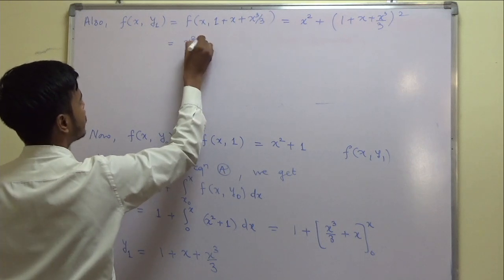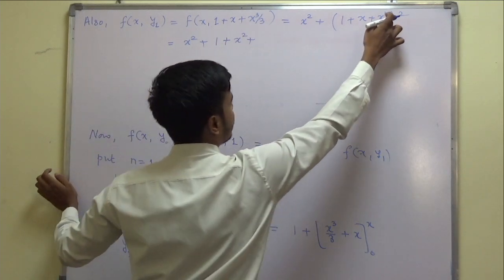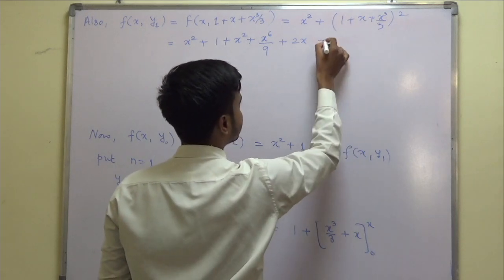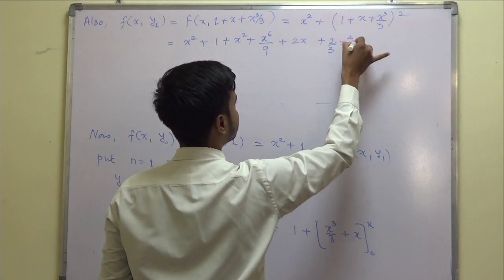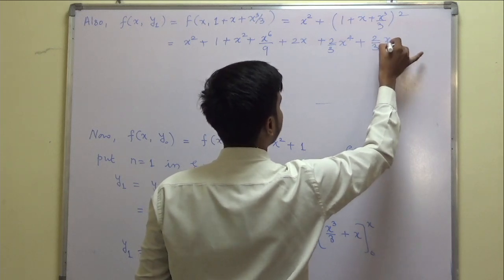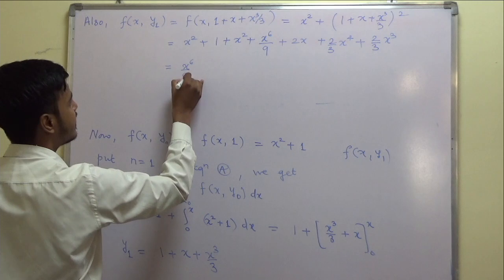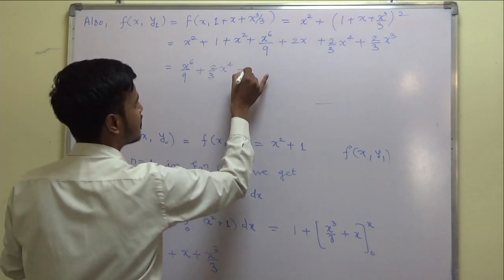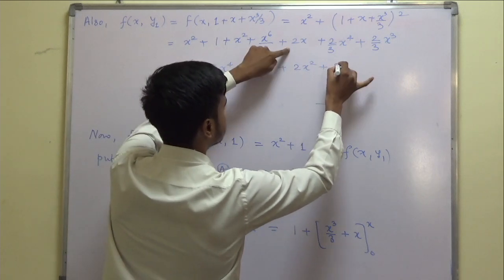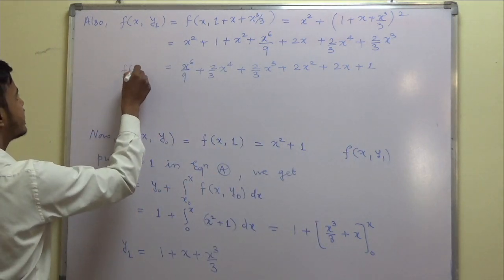Expanding (1 + x + x³/3)²: we get 1 + x² + x⁶/9 + 2x + (2/3)x⁴ + (2/3)x³. So f(x, y₁) = x⁶/9 + (2/3)x⁴ + (2/3)x³ + 2x² + 2x + 1, after collecting all terms including the outer x².